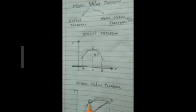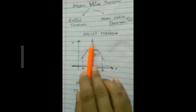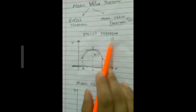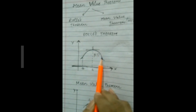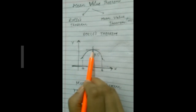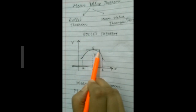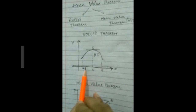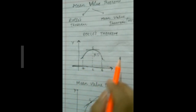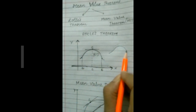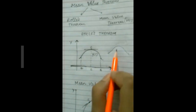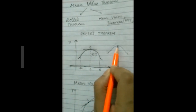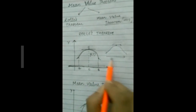First I'll tell you the geometrical interpretation of the two theorems. Rolle's Theorem says that if there is a curve which is continuous in the interval [a, b], then there exists at least one point on the curve at which the tangent is parallel to the x-axis. Suppose this is the curve, continuous in interval [a, b], then there exists at least one point at which the tangent is parallel to the x-axis.